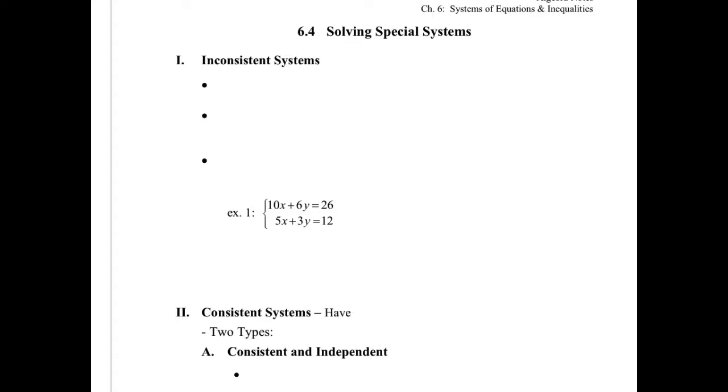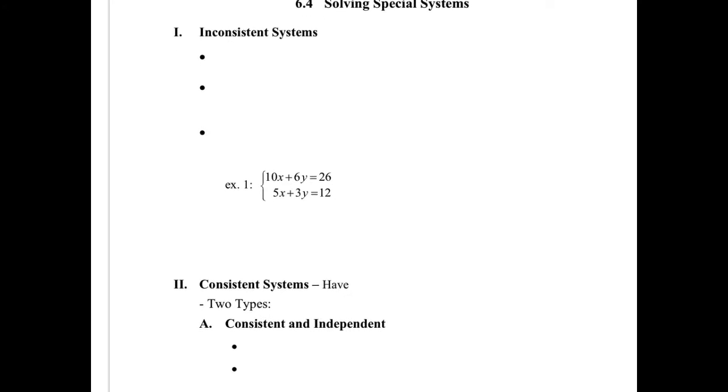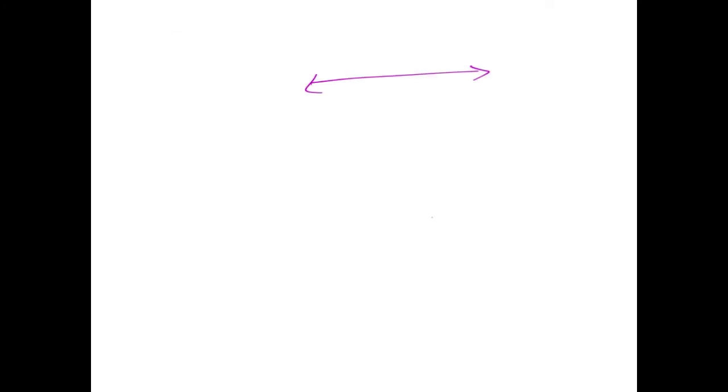This section here, I've decided not to hold you accountable to know the name, so whether it's consistent or inconsistent or something independent, you don't need to know the names. But here's the point: what we've been doing this whole chapter is getting equations for a couple of lines, and the holy grail is this right there, the spot where they meet.